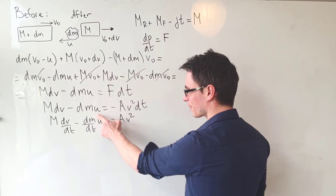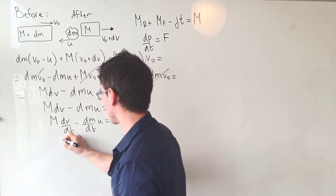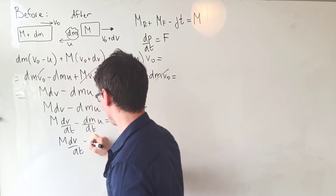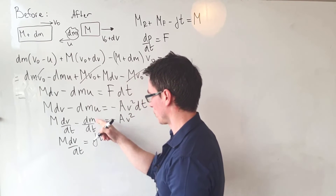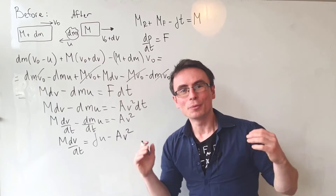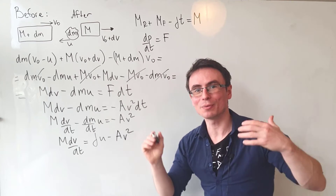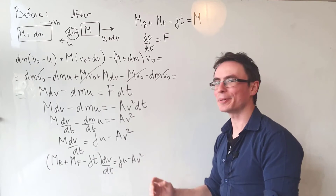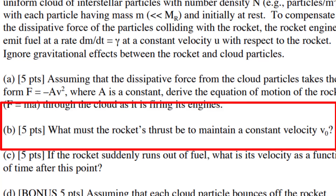This dm/dt is just our γ, so we can rewrite this as m·dv/dt = γu - av². Remember that m is actually given by the full expression for the rocket mass as a function of time. Substituting that in gives us our final equation of motion for the rocket.